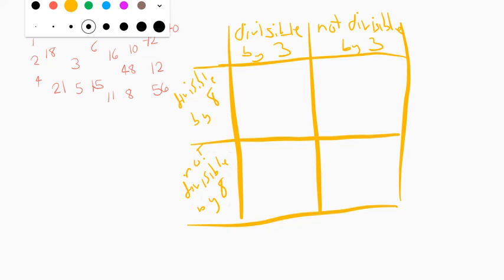What we want to do now is organize these numbers depending on whether they're divisible by 3 or not, and divisible by 8 or not. Let's start with a random one. Let's start with 6.